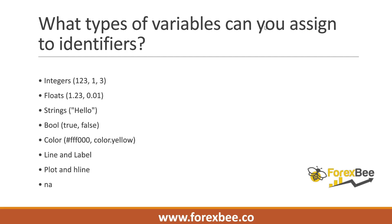Now we'll look at what types of values you can assign to identifiers. You can assign integers, float values, strings, and booleans — that is true or false. You can also assign a color, such as color.yellow, to your identifiers. Additionally, you can assign line, label, plot, and each line objects, as well as the NA variable, which means 'not available.'